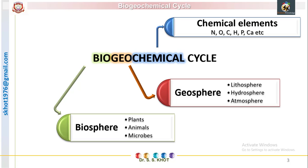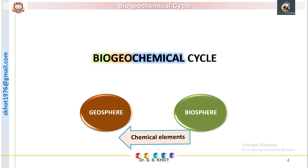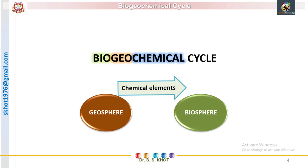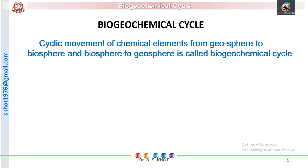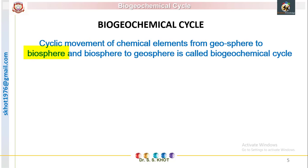So by definition, the biogeochemical cycle is a recycling of chemical elements between the biosphere and geosphere — specifically, a cyclic movement of chemical elements from the geosphere to the biosphere and from the biosphere back to the geosphere.